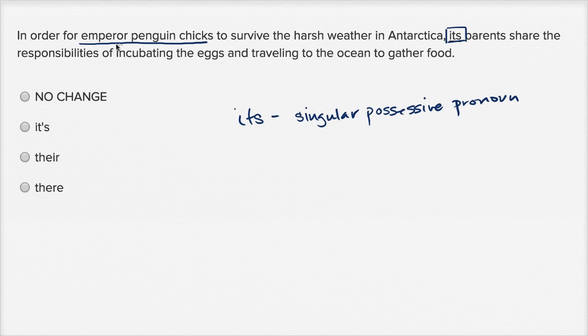The singular possessive pronoun would make sense if it said, in order for an Emperor Penguin Chick to survive the harsh weather in Antarctica, its parents. So if this was just, if they were just talking about one chick. But they're talking about many chicks.